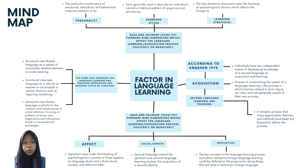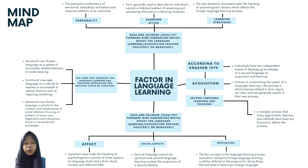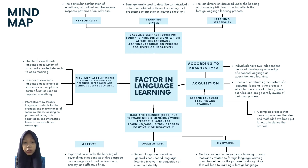Next, personality and learning styles. Personality is the particular combination of emotional, attitudinal, and behavioral response patterns of an individual. Learning style is a term generally used to describe an individual's natural or habitual patterns of acquiring and processing information in a learning situation. Some aspects of personality and learning styles include extroversion or introversion, risk taking, field independence or dependence, and visual, auditory, or kinesthetic styles.